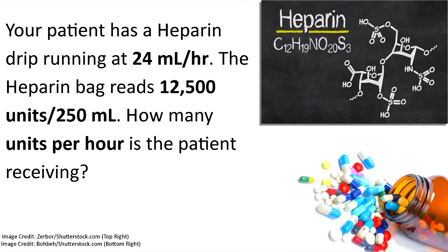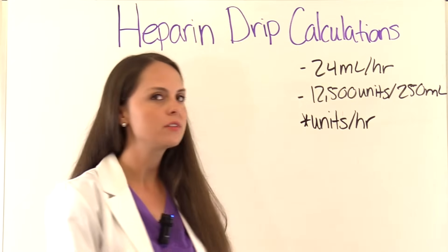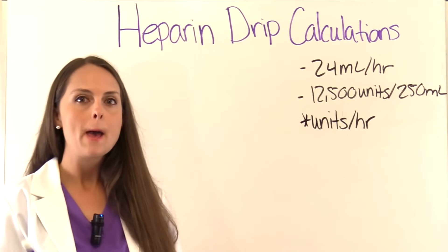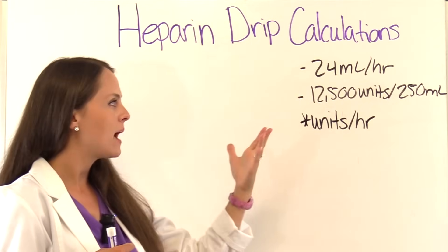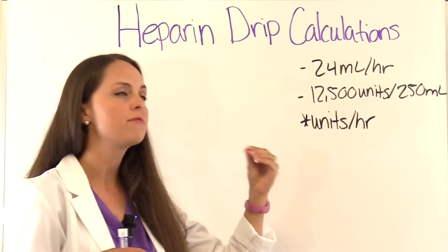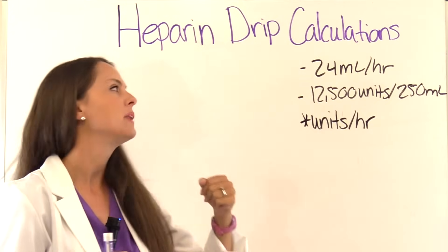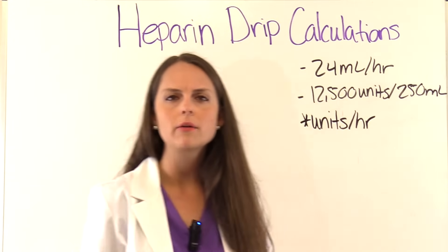Our next problem says your patient has a heparin drip running at 24 milliliters per hour. The heparin bag reads 12,500 units per 250 mls. How many units per hour is the patient receiving? We need to figure out how many units per hour this patient is receiving based on what's in the bag and the flow rate. The bag tells us there are 12,500 units per 250 mls, and the pump is infusing at 24 mls per hour.